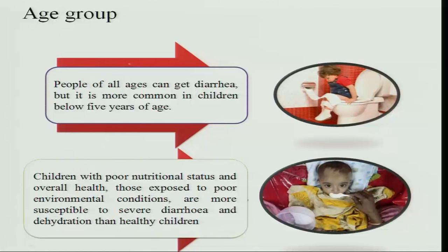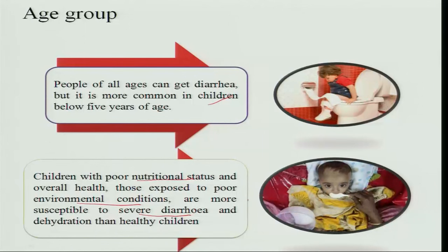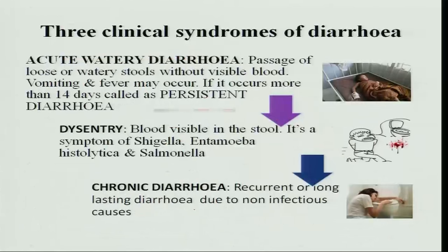People of all ages can get diarrhea, but it is most common in children below 5 years of age. Children with poor nutritional status and overall poor health who are exposed to poor environmental conditions are more susceptible to severe diarrhea, which leads to dehydration. Poor environmental conditions, poor sanitation, and poor hygiene are the main causes for infectious diarrhea.